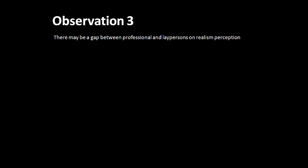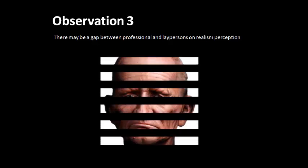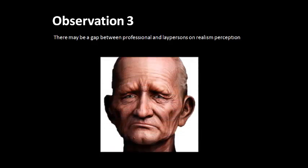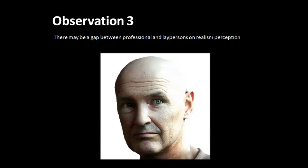Observation three is that there may be a gap between professionals and laypersons on realism perception. Details on skin texture, such as wrinkles and freckles, may be more effective for inducing realism perception in laypersons than professionals. Professionals focus more on skin glossiness and discriminating photos from CG images.